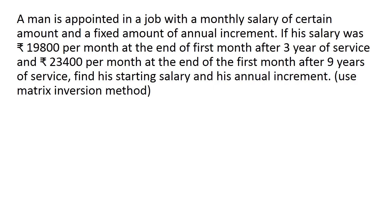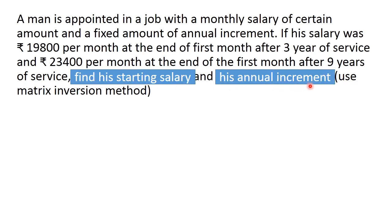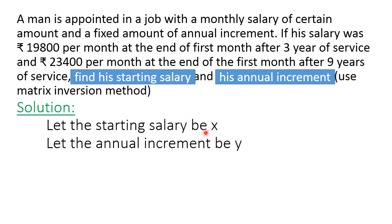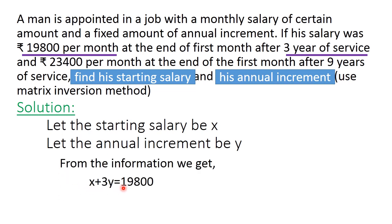To solve this problem, first we write the equations. We want to find the starting salary and the annual increment — these are the unknowns. Let X be the starting salary and Y be the annual increment. It is given that after 3 years of service he will get Rs. 19,800. So, the starting salary plus 3 times the annual increment equals 19,800. The first equation is: X + 3Y = 19,800.